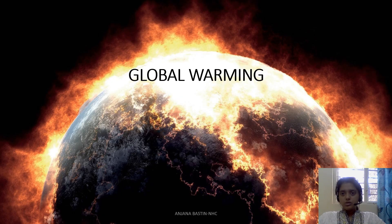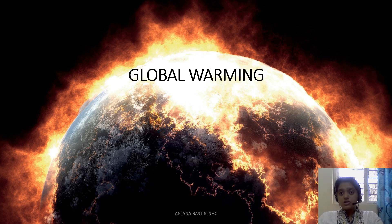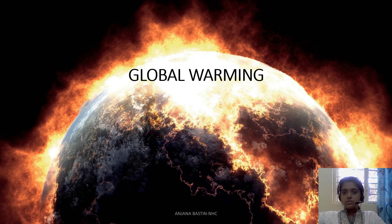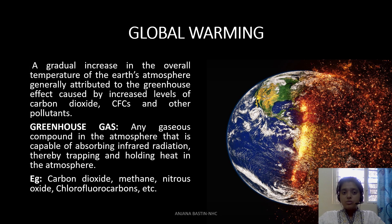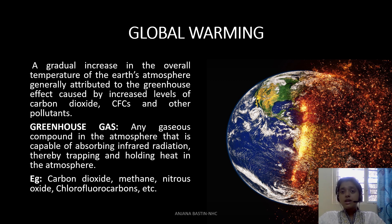Now from climate change we move to global warming. Global warming is where, due to the presence of greenhouse gases — the greenhouse effect — heat waves or heat energy are not allowed to pass from the earth's surface to outer space, and the earth gradually warms up. Global warming is a gradual increase in the overall temperature of the earth, attributed to the greenhouse effect caused by increased levels of carbon dioxide, chlorofluorocarbons, and other pollutants.